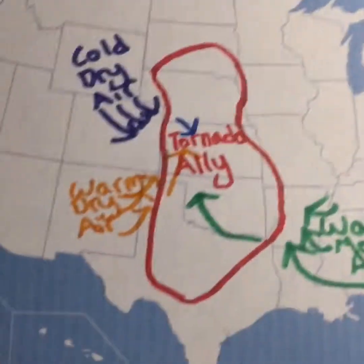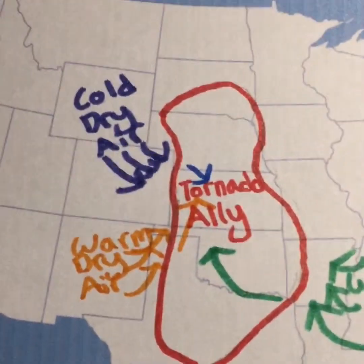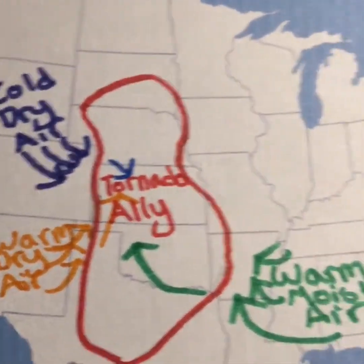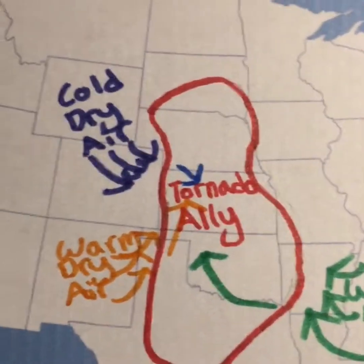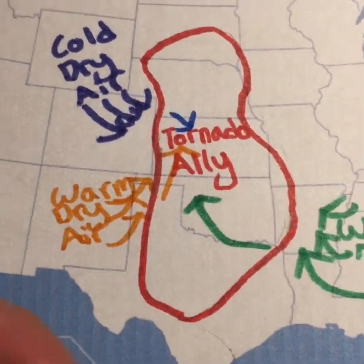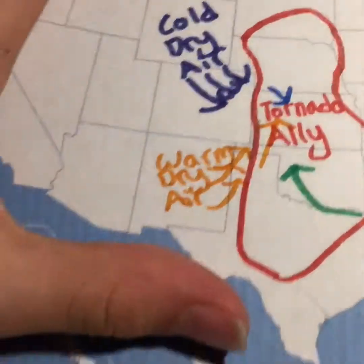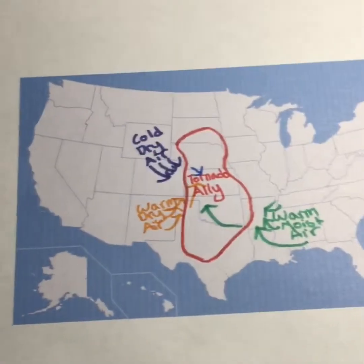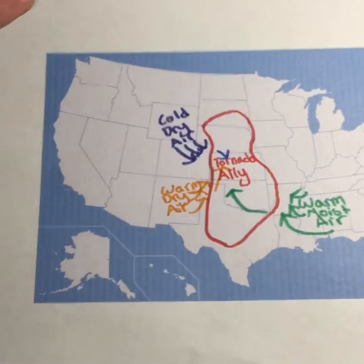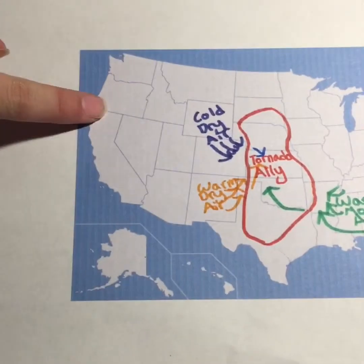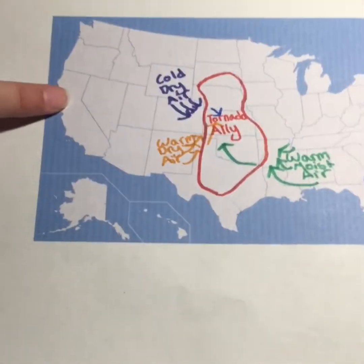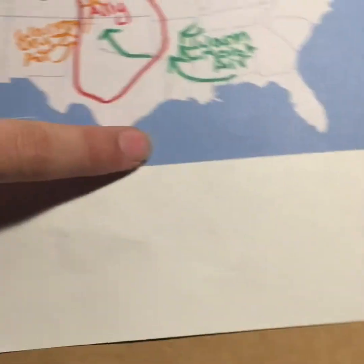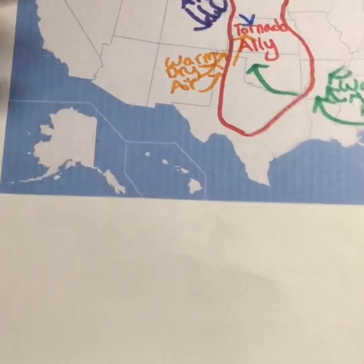So first, to fully understand what this thing is, you have to know where it is on the map. Here is a map of the United States — Pacific Ocean, of course, and Atlantic Ocean. Go to Mexico.